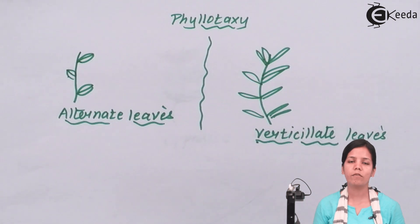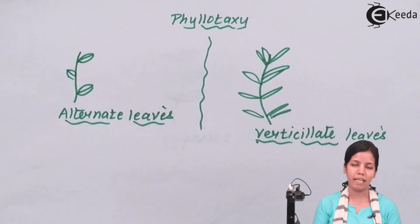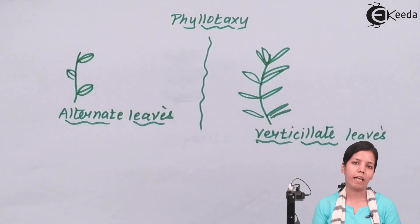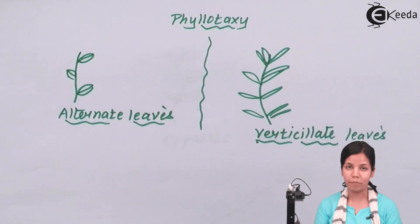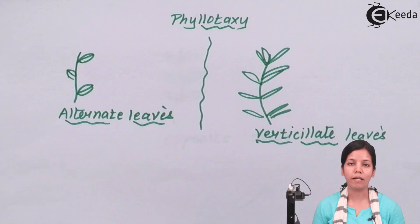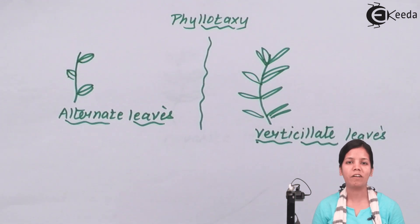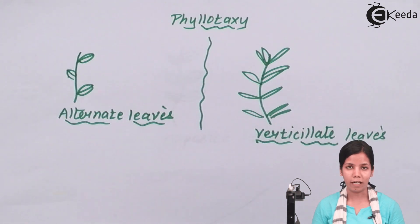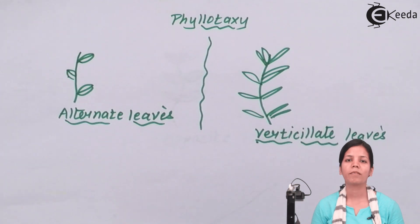In this part of the chapter, we have studied Phyllotaxy — the arrangement of leaves on stems — and its various forms. I hope whenever you see a plant nearby, you will be able to recognize the different kinds of Phyllotaxy. I hope you are all clear about this concept. Thank you.